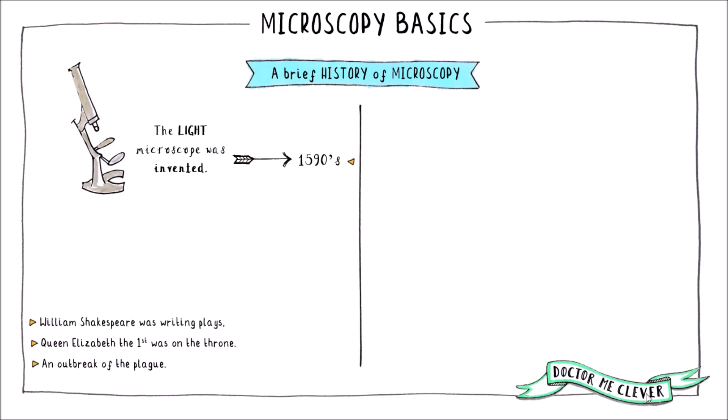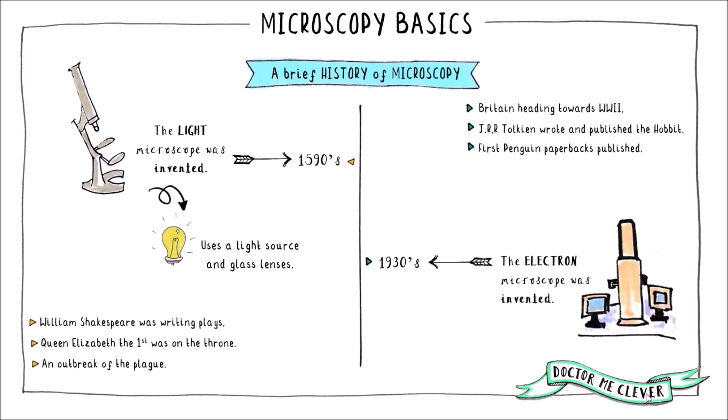These microscopes use light as an illuminating source and glass lenses. Much later, in the 1930s — when Britain was heading towards another world war, Tolkien had just published The Hobbit, and Penguin Books had just come on the scene — the electron microscope was invented and it revolutionised research. These microscopes harnessed the power of electrons and electromagnetic lenses.